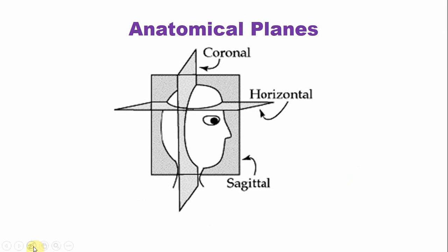Now the anatomical planes. If the body is equally divided into two equal halves from the midline, that is known as the sagittal plane. The horizontal plane divides the body horizontally. Another plane dividing the body into two halves — not anteroposteriorly — is the coronal plane.